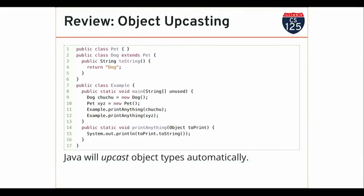My example class defines a static method called printAnything that takes an instance of an Object as an argument. The type of the argument to printAnything is Object. It was a little confusing at first that I could actually pass something that wasn't exactly an Object — I could pass a pet to printAnything, I could pass a dog to printAnything. This code will run and do the right thing. The reason is because Java will upcast objects automatically. Upcasting means allowing an object to morph into something that's higher on the class hierarchy. Object is the root, so any Java object can be upcast automatically to a capital-O Object.